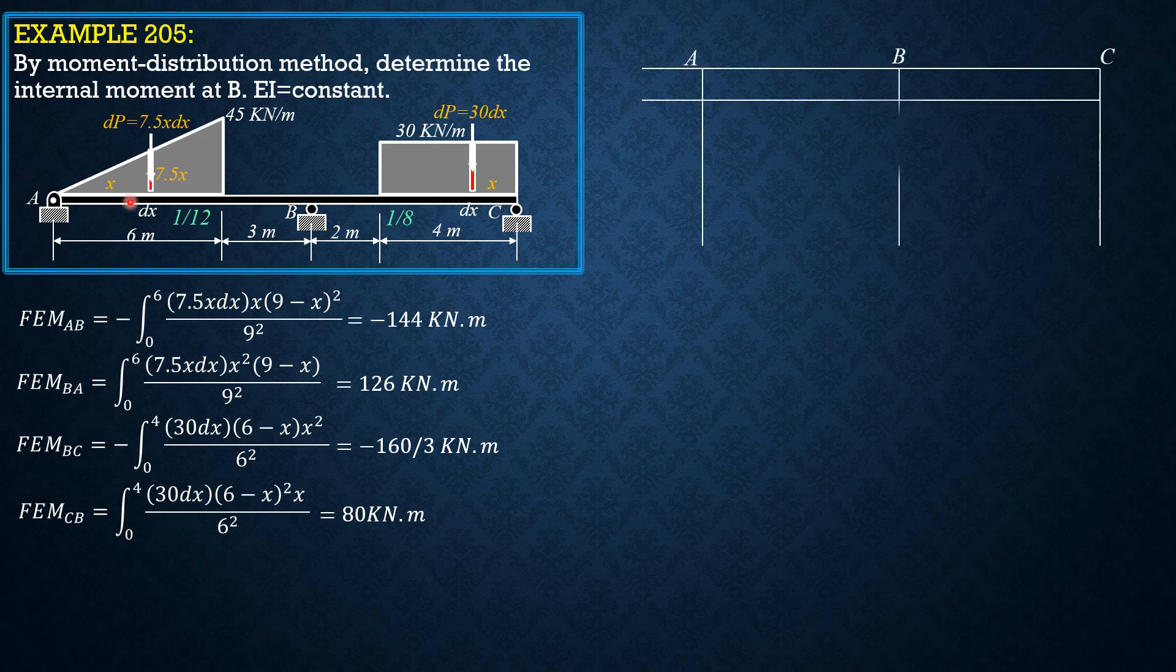The distribution factor for A, let's now prepare the tabulation. The distribution factor for A is negative 1. That's the technique, make it negative, so that we don't worry about changing signs after distributing moments, unbalanced moments.